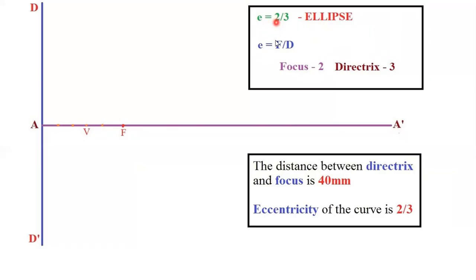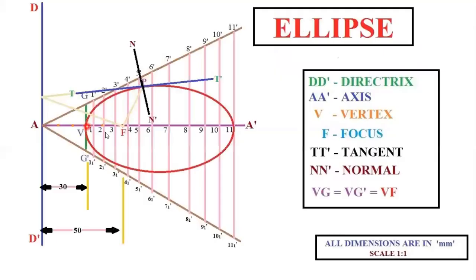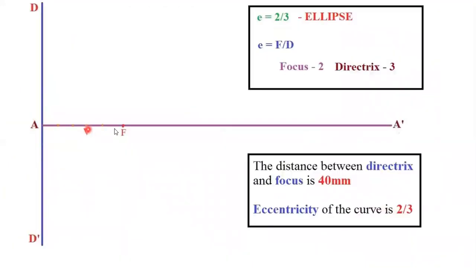Here the eccentricity is 2/3, meaning two parts from focus and three parts from directrix. The distance between directrix and focus is 50 mm, so mark the focus on the axis line 50 mm from the directrix. The vertex should be marked two parts from the focus. Since 2+3=5, divide the 50 mm line into five equal parts of 10 mm each. Fix the first vertex — in an ellipse there are two vertices.